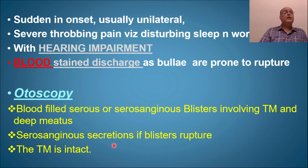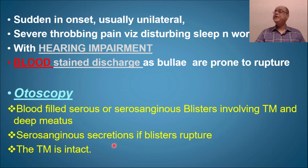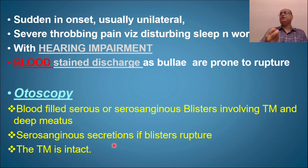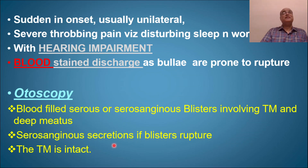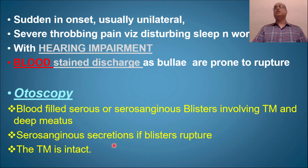There is severe throbbing pain due to inflammation of the superficial layers of the tympanic membrane, severe enough to disturb sleep and work. There may be hearing impairment of the conductive type, due to fluid accumulation in the middle ear. This results from blockage of the medial end of the Eustachian tube opening into the nasopharynx, secondary to the preceding upper respiratory tract infection.